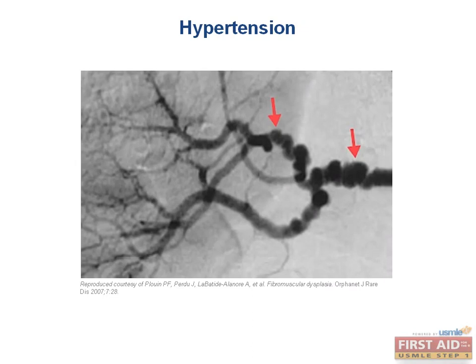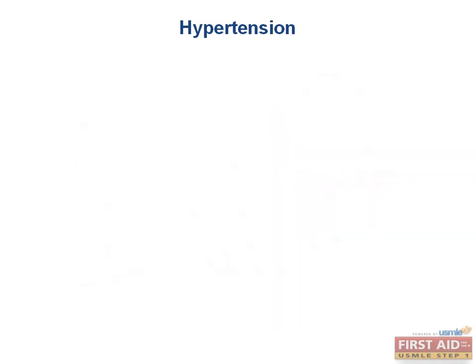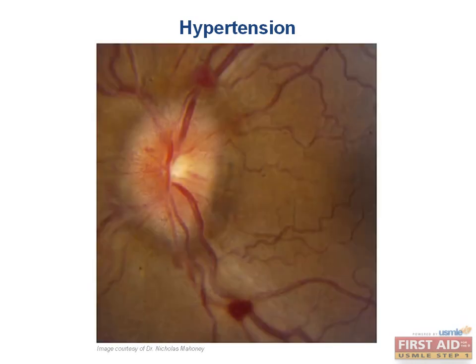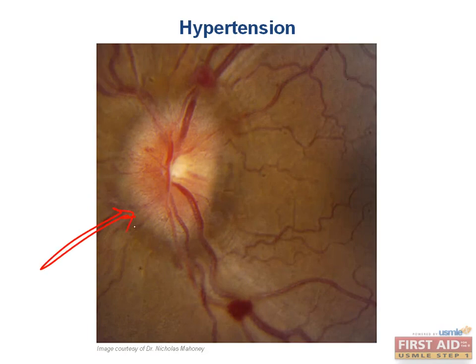Hypertensive emergency is defined as 180 over 120 with evidence of super-high pressures in certain organ systems. A favorite for board examiners is to include the picture of papilledema. Papilla comes from the Latin word for nipple, and edema is Greek for swelling — so papilledema describes a nipple-like swelling. As seen in the image, the optic disc looks swollen and edematous. Papilledema is the swelling of the optic disc.